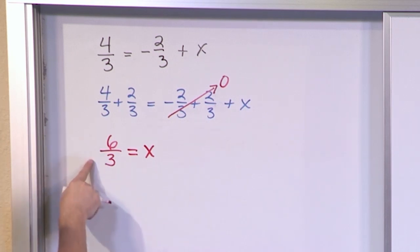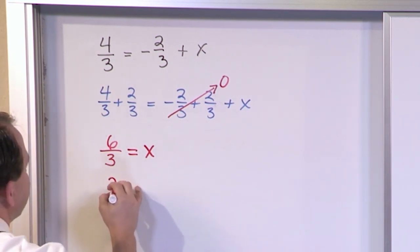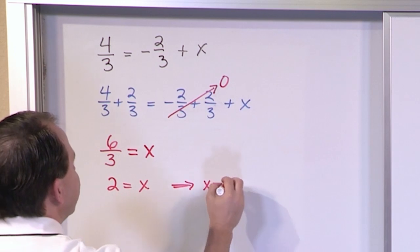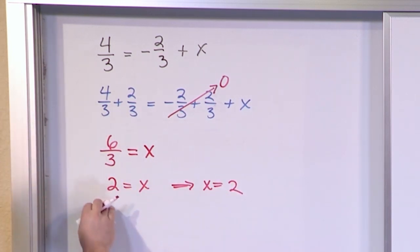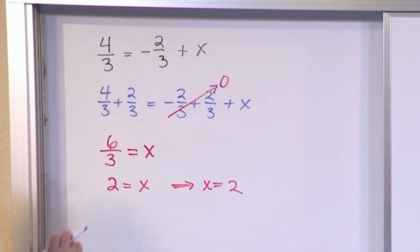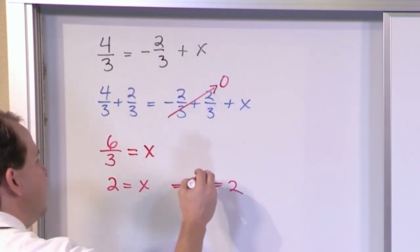Now let me ask you this. 6 thirds is really 6 divided by 3. So what is that? So that's 2. So 2 is equal to x. So it doesn't matter that it's 2 is equal to x. It's exactly the same thing as x is equal to 2. You've learned that it doesn't matter if x is on the left or the right hand side. You still just try to get it by itself and then you have the answer. So x is equal to 2. That is the answer to this problem.